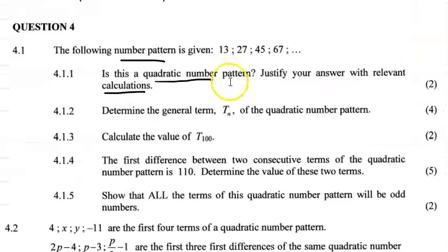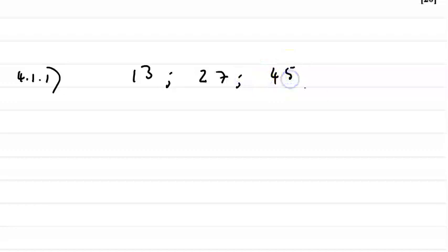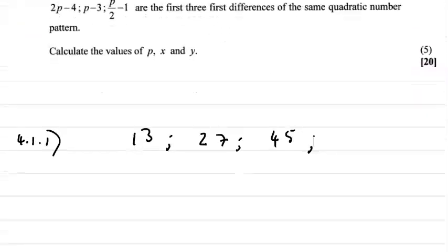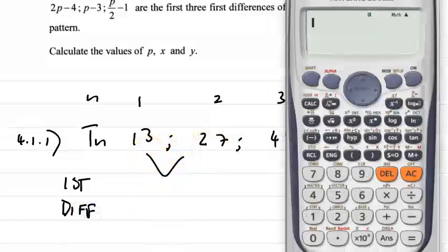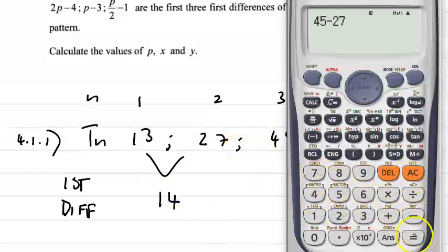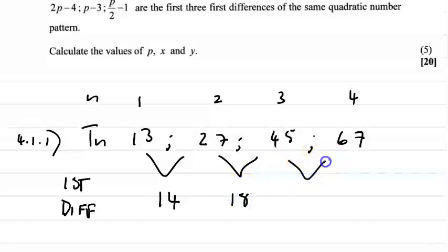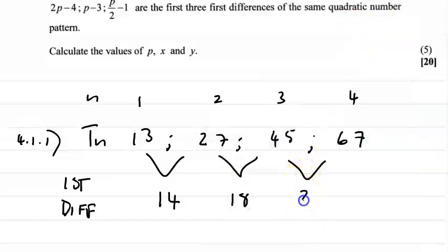4.1.1. Let's write our sequence out: 13, 27, 45, and 67. These are positions 1, 2, 3, and 4 — there are 4 terms given. Now the first differences: 27 minus 13 equals 14; 45 minus 27 equals 18; 67 minus 45 equals 22. Remember when working out the differences, it's T2 minus T1, T3 minus T2, T4 minus T3, and so on.